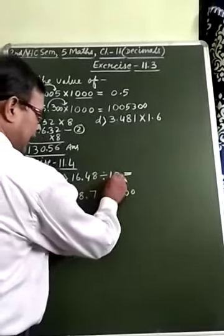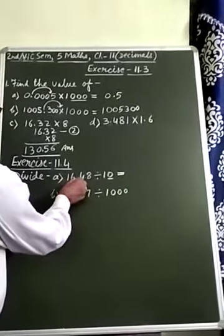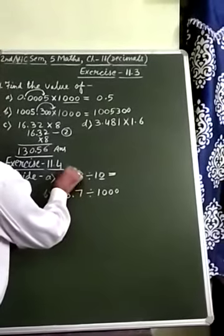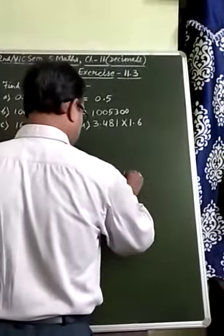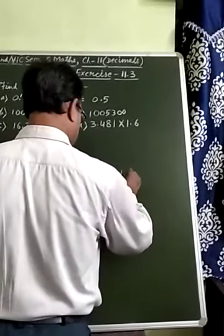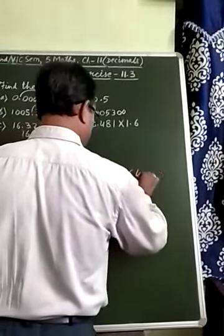In divisor, here, we have 1 zero. So, decimal point will move to the left side, 1 digit. So, it will come before 6. So, answer will be 1.648.